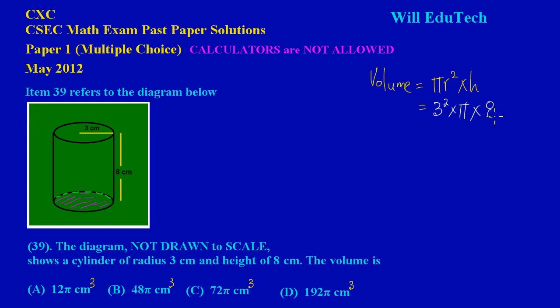So this would be equal to 3² which is the same as 3 times 3, and 3 times 3 gives us 9π times 8. Then simply you can just multiply your numbers: 9 times 8 gives us 72, so we would have 72π centimeters. Since it's volume we're calculating, it must be in centimeters cubed. We're looking for that answer, and when you look here, option C is 72π cm³. So that would be the correct option.